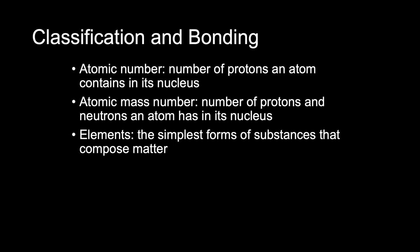For classification and bonding, it's important to understand a few definitions: the atomic number, the atomic mass number, elements, and compounds. The atomic number of an atom refers to the number of protons it contains in its nucleus. In a stable atom, the number of electrons is equal to the number of protons, so the atomic number also indicates the number of electrons.